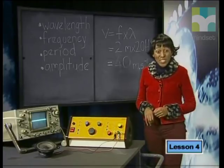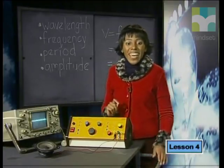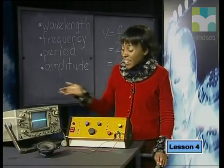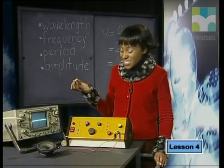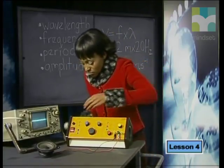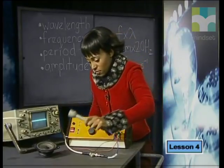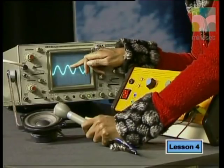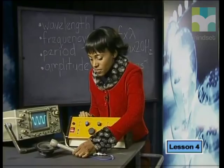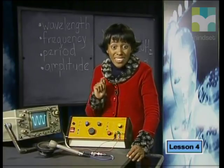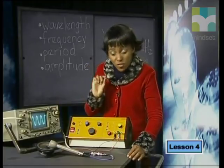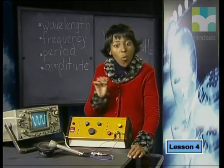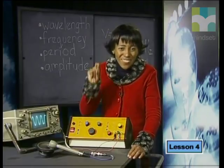Luckily technology has come to our rescue. This machine is called an oscilloscope. It detects the compressions and rarefactions of longitudinal waves and translates them into an electric signal to produce a graph of distance against time. This distance reading on the vertical axis gives us the amplitude of the longitudinal wave. Please don't get confused and think that because this graph looks like a transverse wave pattern, that sound is actually a transverse wave. It is not. What we see here is a graph, and sound is definitely a longitudinal wave.